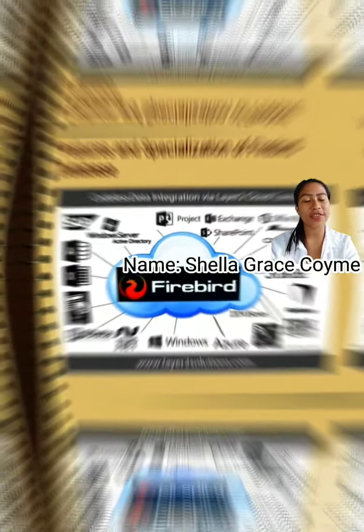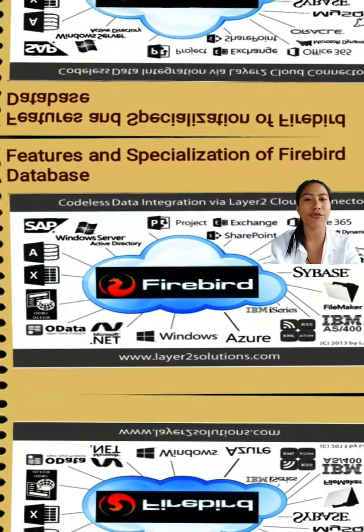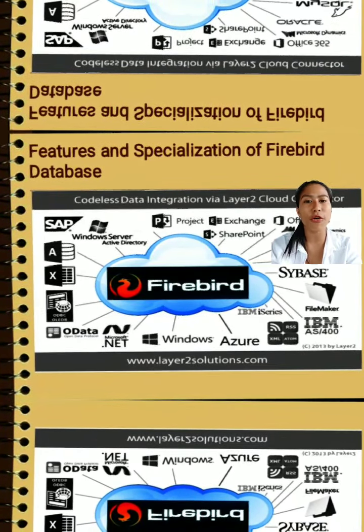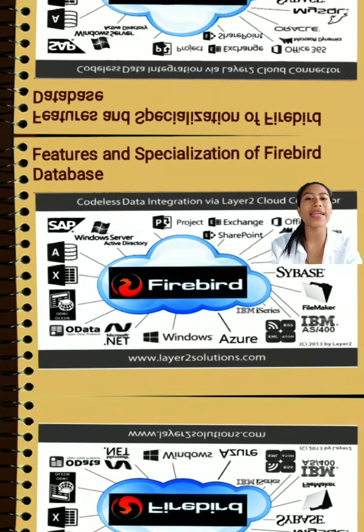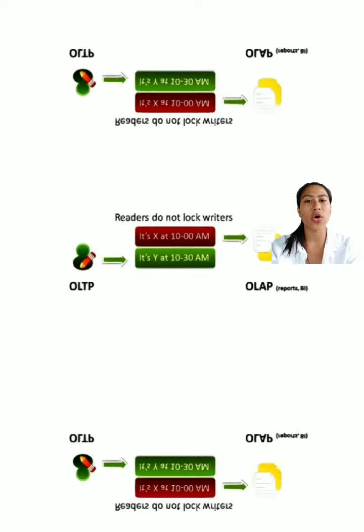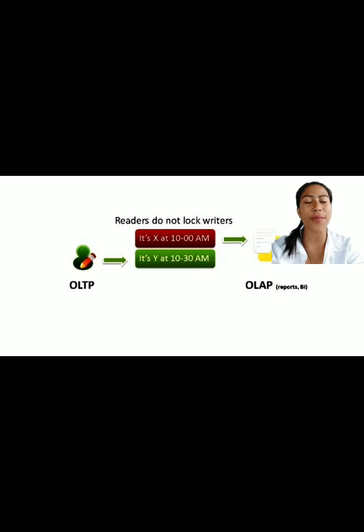Good day everyone, I'm Shala Grace Kuimi. My assigned topic is about the features of Firebird database. The open source Firebird relational database management system performs excellently and scales impressively from an embedded single-user model to enterprise-wide deployments with multiple 2TB+ databases running with hundreds of simultaneous clients. It supports all major platforms and operating systems. One key feature is multi-generational architecture, which enables the development and support of hybrid OLTP and OLAP applications.